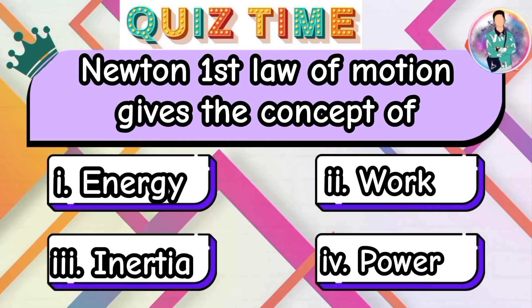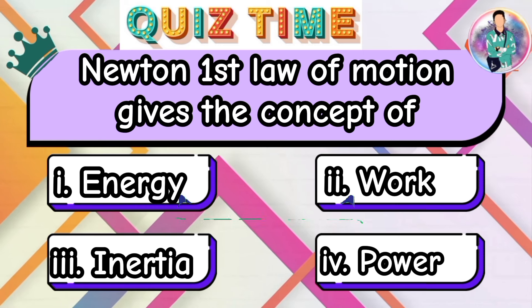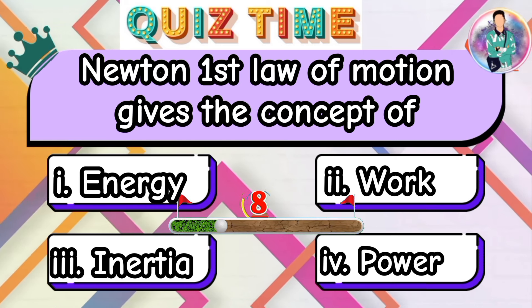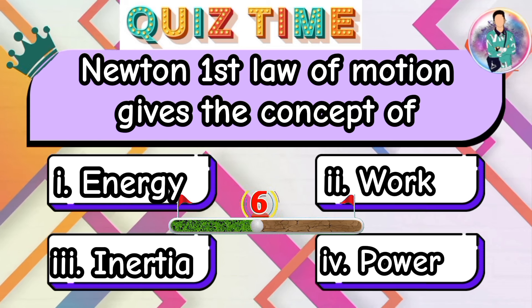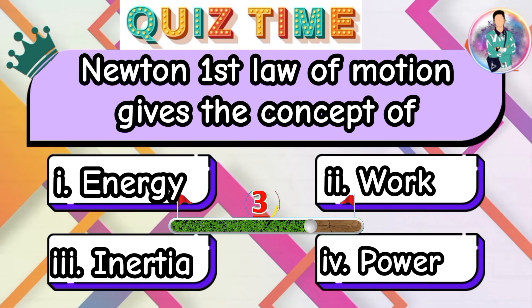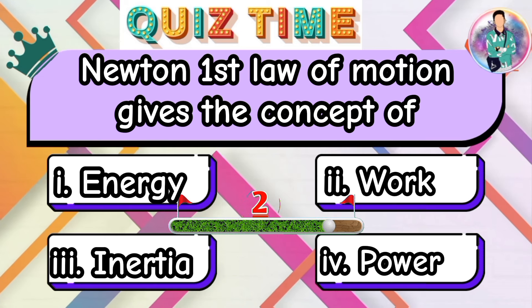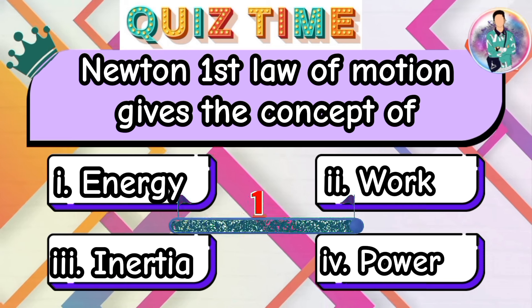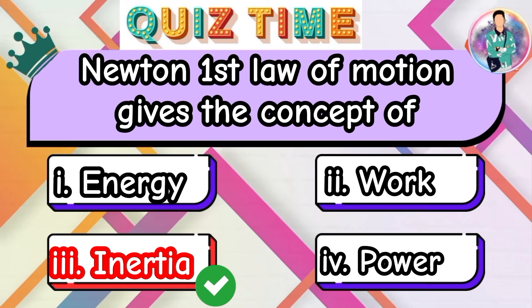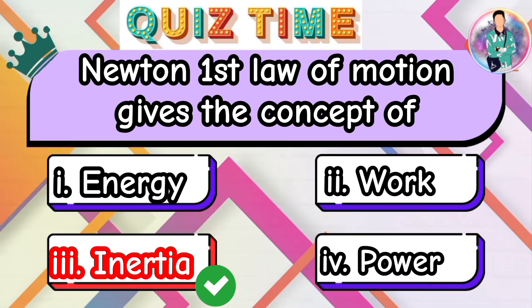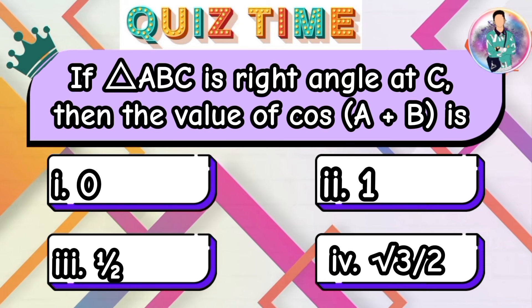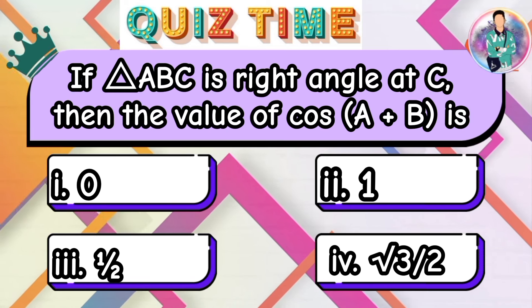Newton's first law of motion gives the concept of... If triangle ABC is right angle at C, then the value of cos(A + B) is?